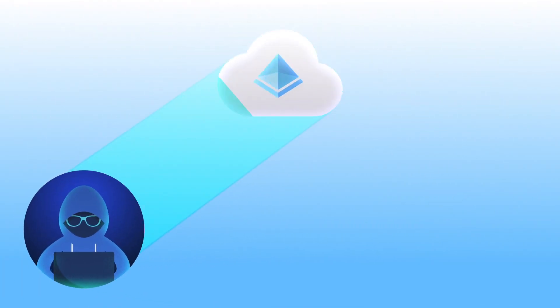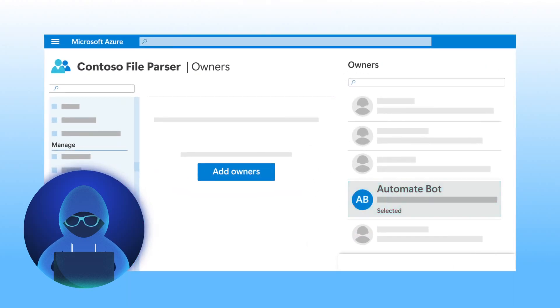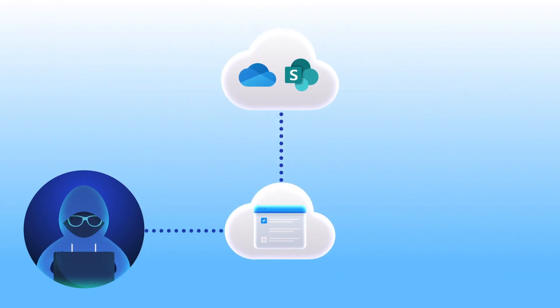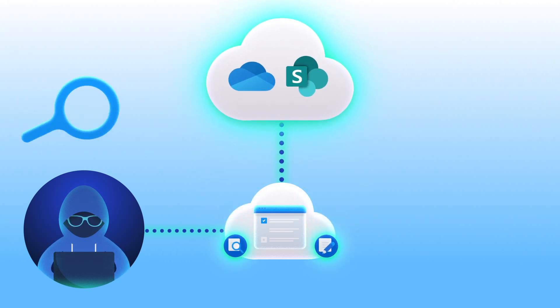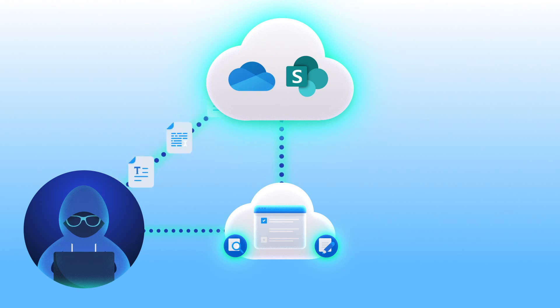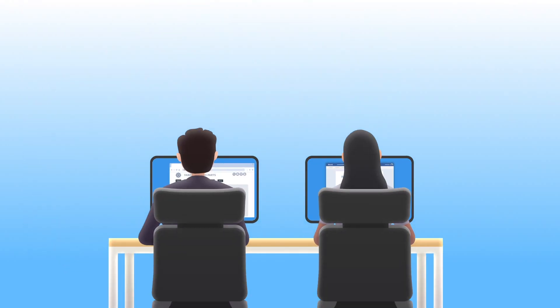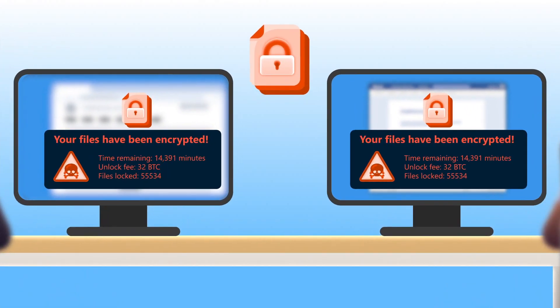Armed with these credentials, our bad actor scans the environment to find our vulnerable app with its high-level permissions and uses them to add another set of credentials for that app. This gives them persistent, high-privileged access with read and write permissions to high-privileged files stored in SharePoint and OneDrive. So now they can exfiltrate the data they want, mass download the files they want, and even modify them using encryption for ransom, which will infect the entire organization.